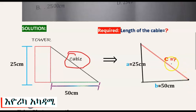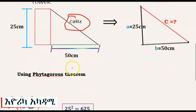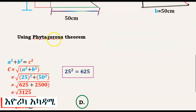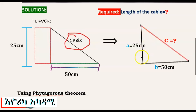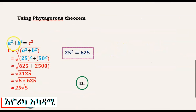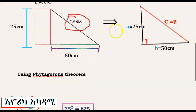This forms a right angle triangle, so we apply the Pythagorean theorem: A squared plus B squared equals C squared, where C squared is the hypotenuse squared and C equals the length of the cable.